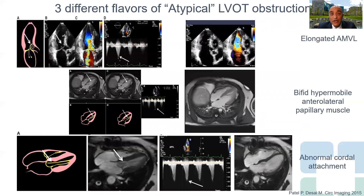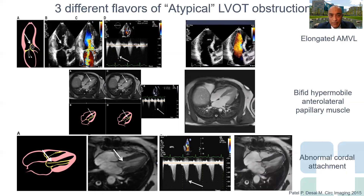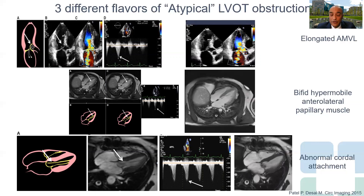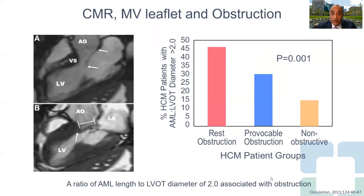Here are three scenarios of atypical outflow tract obstruction. The top panel involves a patient with a very elongated anterior mitral valve leaflet causing dynamic outflow tract obstruction and SAM-related MR. The middle panel shows a patient with bifid hypermobile anterolateral papillary muscle causing outflow tract obstruction with provocation. The third involves abnormal cordal attachment causing dynamic outflow tract obstruction. MRI can further characterize the interplay between mitral valve leaflet and degree of obstruction — a ratio of anterior mitral length to LVOT diameter greater than 2 was associated with outflow tract obstruction.